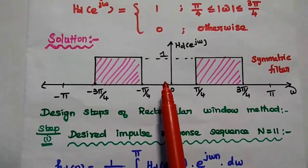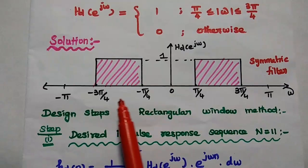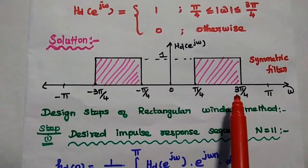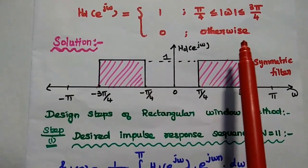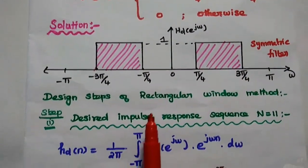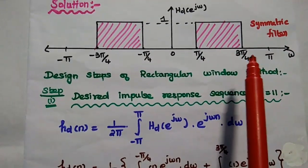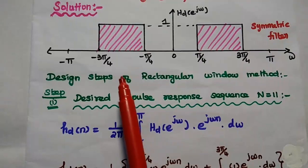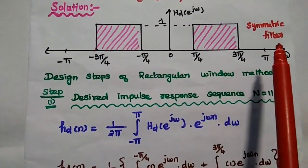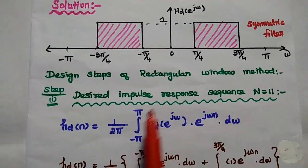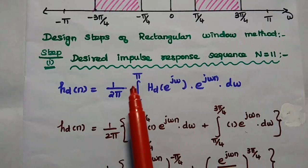The value is 1 when the frequency is from −3π/4 to −π/4 on the negative side, and π/4 to 3π/4 on the positive side. This modulus sign represents both the positive side as well as the negative side. From this diagram, we can understand that the given filter is a symmetric filter — the negative side as well as positive side values are exactly similar. That is called a symmetric filter. We are going to use the rectangular window method to design this FIR filter.